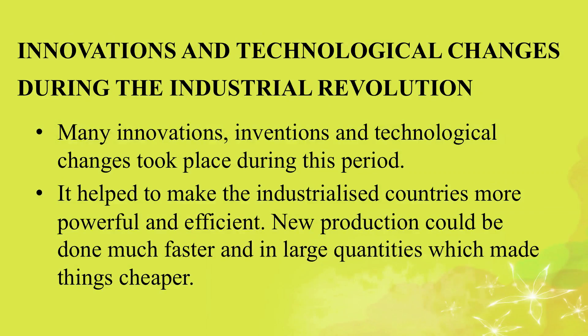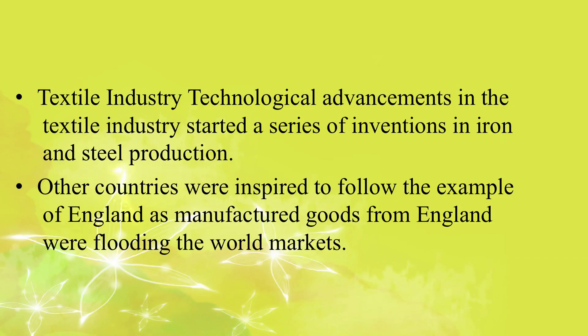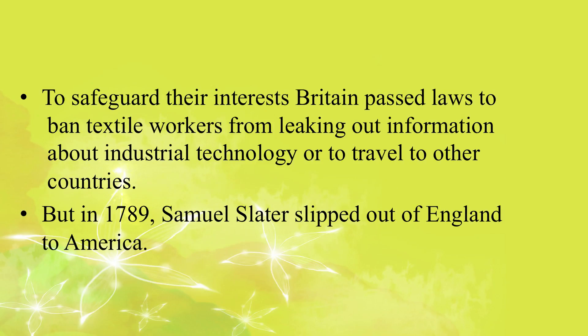Many innovations, inventions, and technological changes took place during the Industrial Revolution. They helped to make the industrialized countries more powerful and efficient. New production could be done much faster and in larger quantities, which made things cheaper. These inventions had maximum impact on the textile and transport industries. Technological advancements in the textile industry started a series of inventions in iron and steel production. Britain passed laws to ban textile workers from leaking information about industrial technology or travelling to other countries.